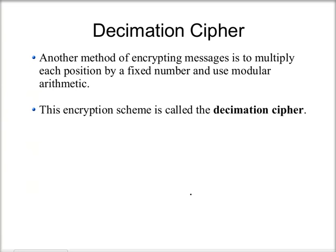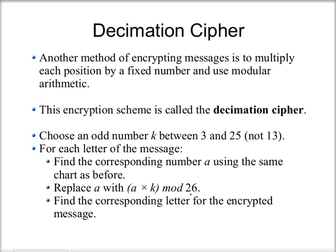The next type of encryption scheme is similar, but instead of adding, we're going to multiply. This is called the Decimation Cipher. We choose an odd number K between 3 and 25, but not 13. The reason we can't use even numbers or 13 is because this would encode more than one letter of the alphabet as the same new letter, so we wouldn't be able to undo the encryption easily. For each letter of the message, we find the corresponding number A using the same chart as before, and this time replace A with A times K mod 26, then find the corresponding letter for the encrypted message.